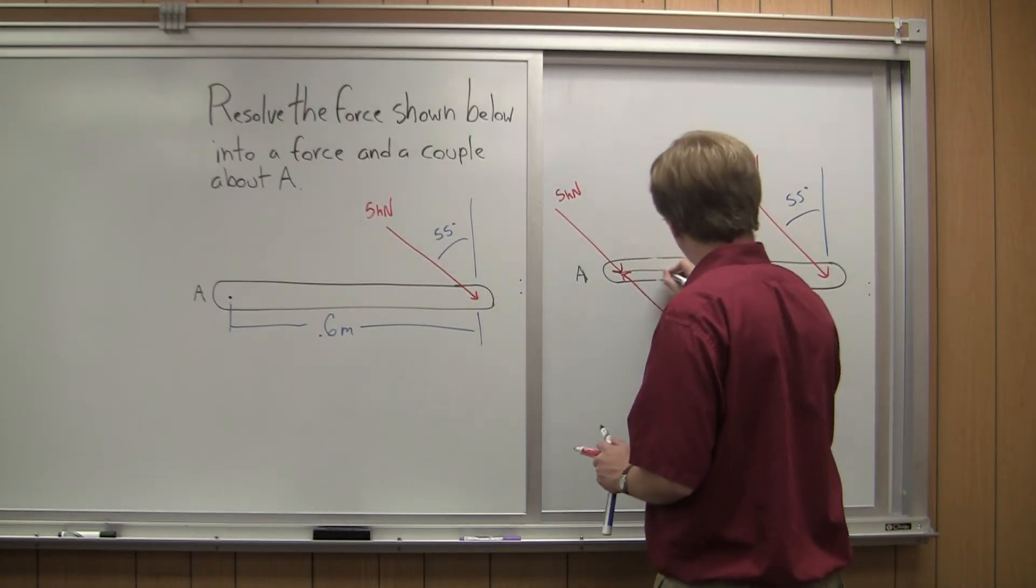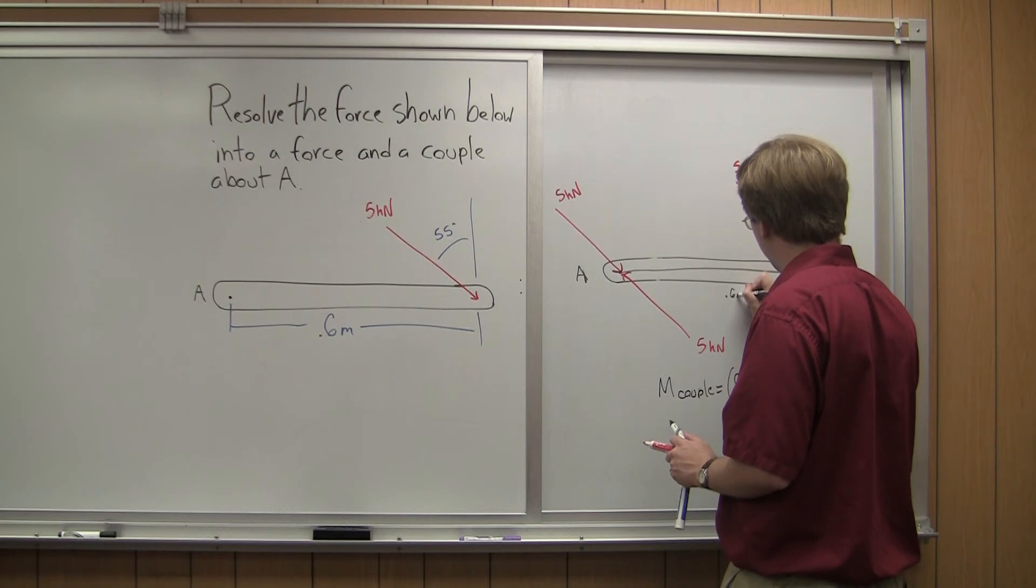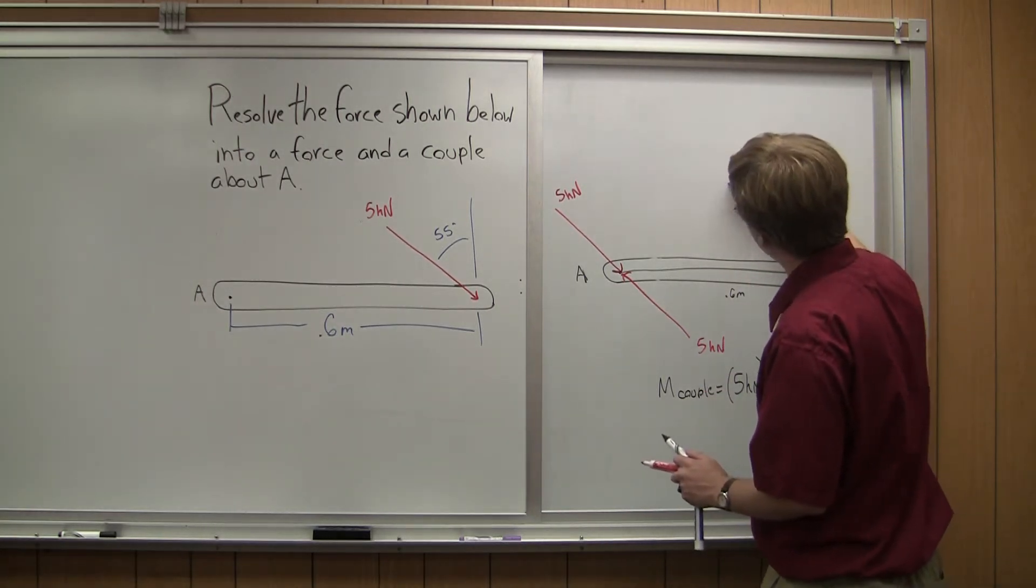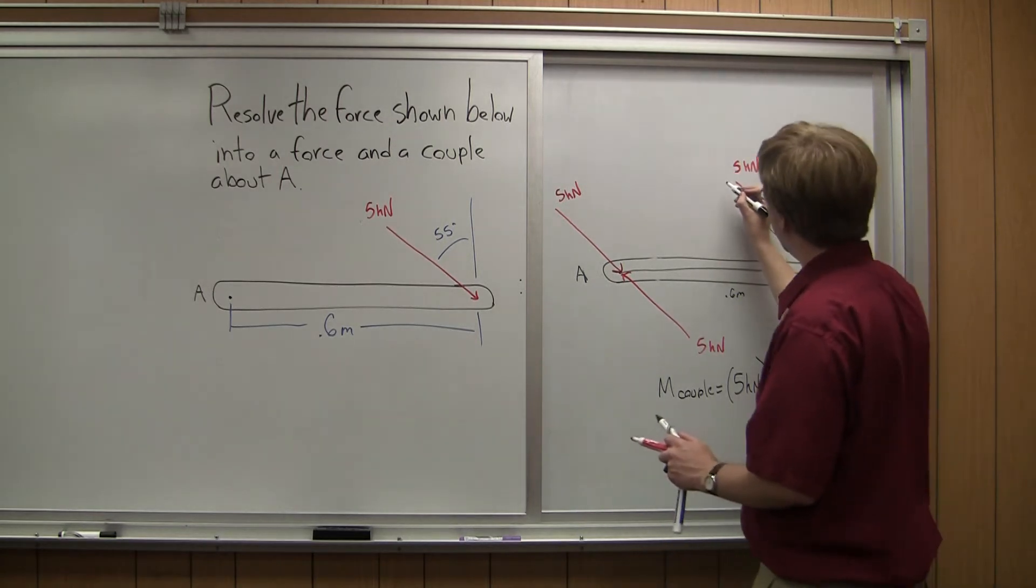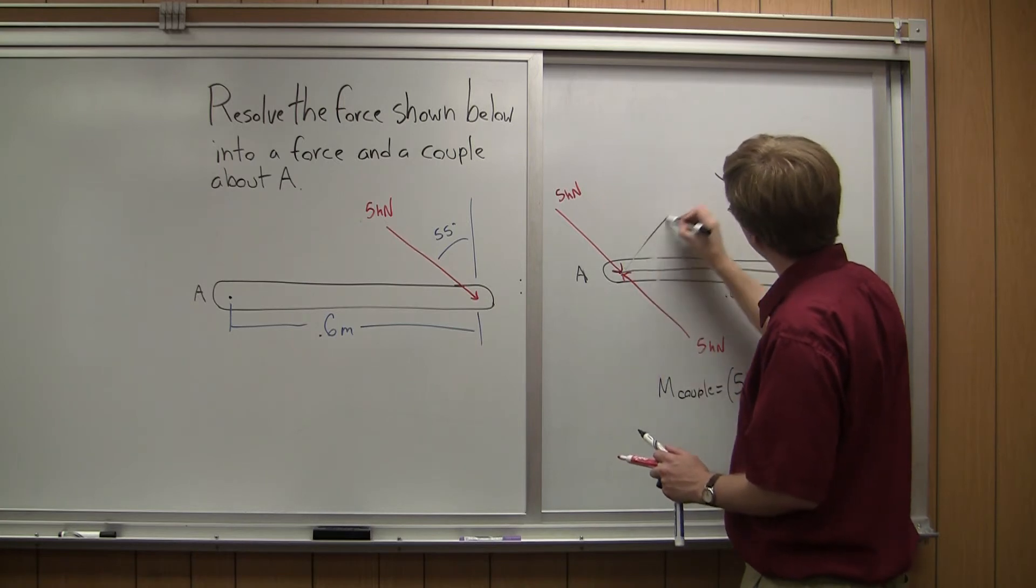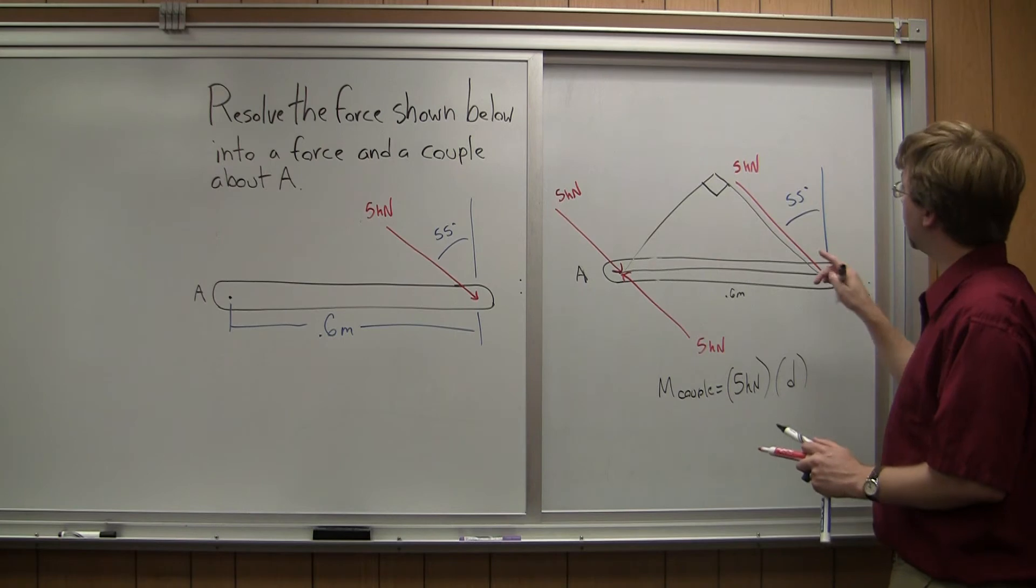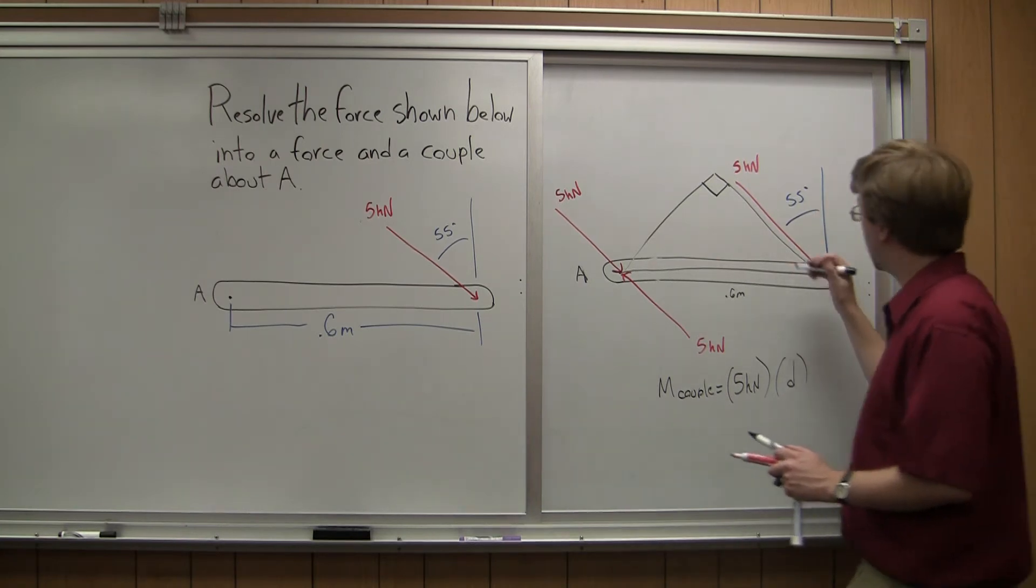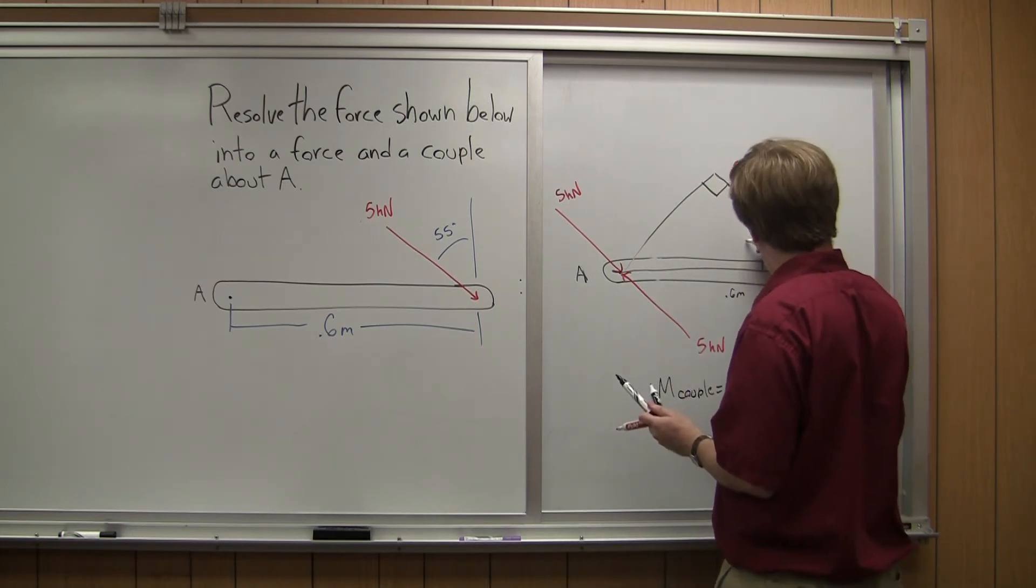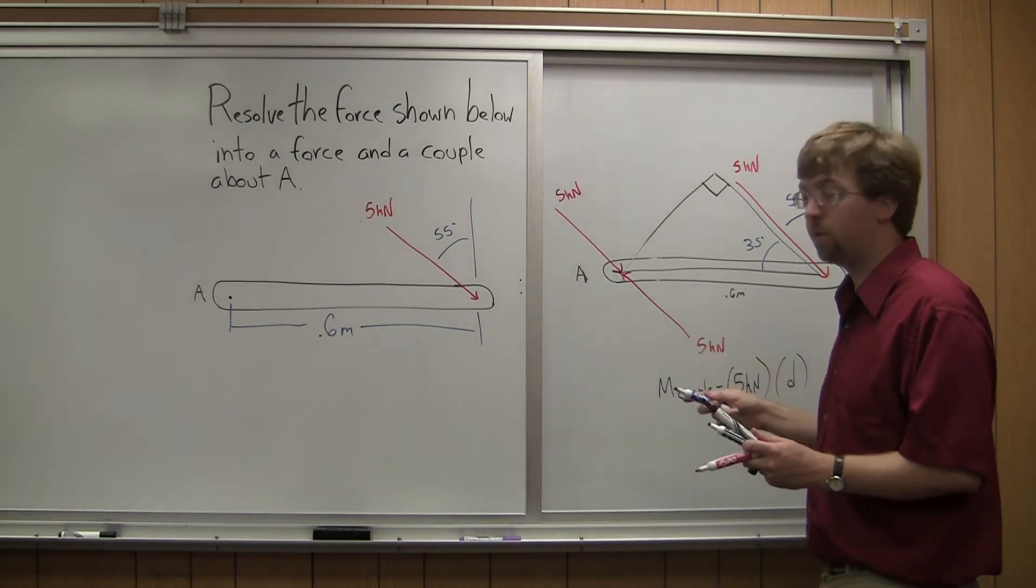So I know that one arm of my triangle here is 0.6 meters long. If I draw another arm going parallel to this force, I know the perpendicular distance is the shortest distance. So I've got a right triangle here, and I can figure out if this is 55 degrees from the vertical, this is going to be 35 degrees here. And now I've got enough in my triangle.